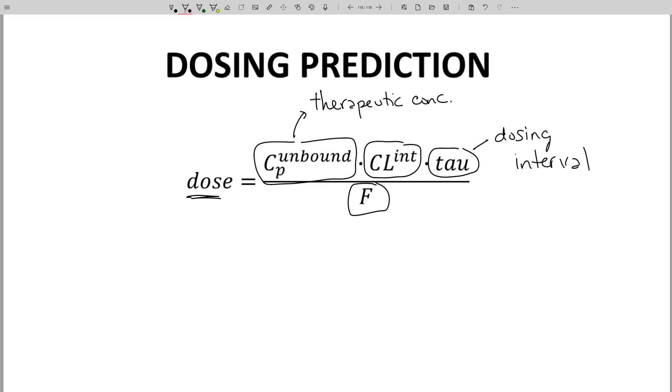We've talked about intrinsic clearance. This is a hepatic clearance as predicted through an in vitro assay. Something we didn't mention is that Clint varies based on F sub U. So the importance of the unbound fraction is a key concept for intrinsic clearance.